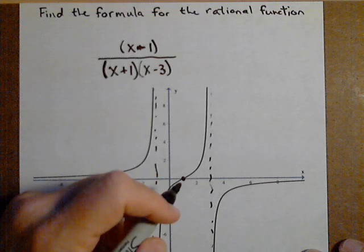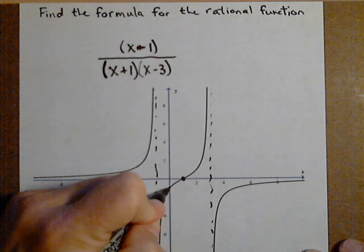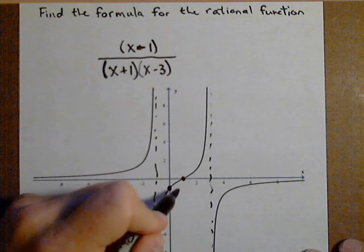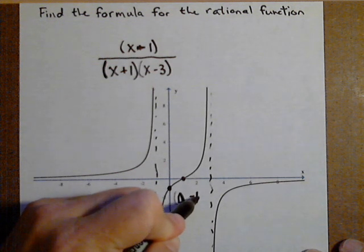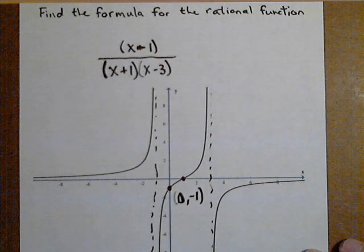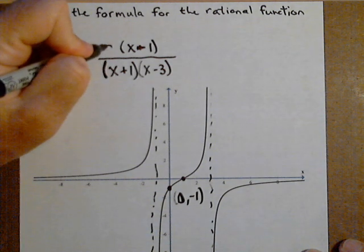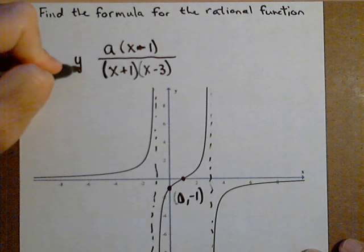Lastly, we want to see if there's another point not on the x-axis that we can identify. We have a y-intercept here at roughly (0, -1). That's going to help us find any factor, we'll call it a, that might be out in front.